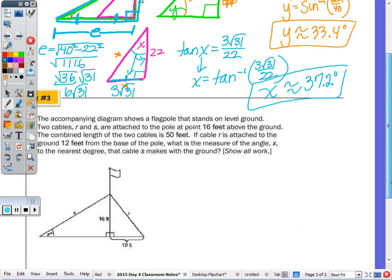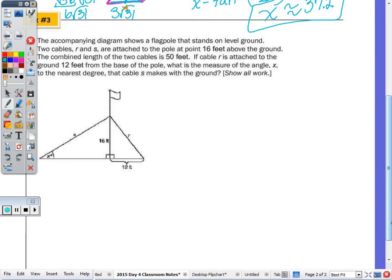Last one. It says the accompanying diagram shows a flagpole that stands on level ground. Two cables, R and S, are attached to the pole 16 feet above the ground. The combined length of the two cables is 50 feet. So R plus S equals 50. If cable R is attached to the ground 12 feet from the base of the pole, what is the measure of angle x to the nearest degree? Now, in order to find x, which is a part of this right triangle, I need to know S. So once I find R, I can find S. And this triangle right here, with sides 12, 16, R, this is a multiple of one of our triples. So if we know the triple, we can then double it or triple it.